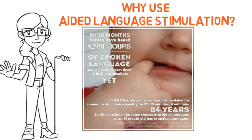When introducing a communication tool to a child, it is important to remember that by 18 months, babies have heard 4,380 hours of spoken language, and we don't expect them to speak yet. Whereas, if an AAC learner only sees symbols modeled for communication twice a week for 20-30 minutes in therapy, it will take 84 years for them to have the same exposure to aided language as an 18-month-old has to spoken language. Yet we often expect the child to be able to use a communication tool right away.